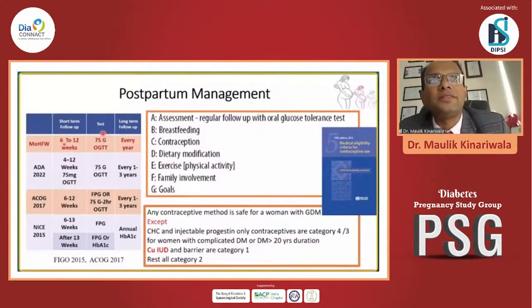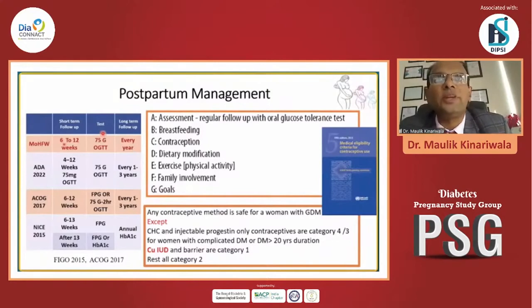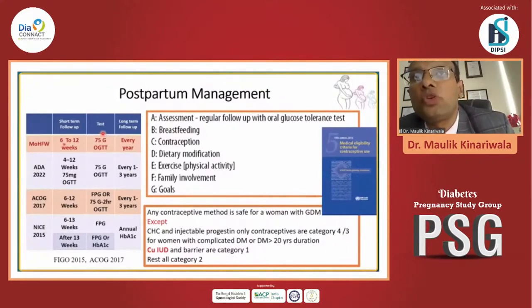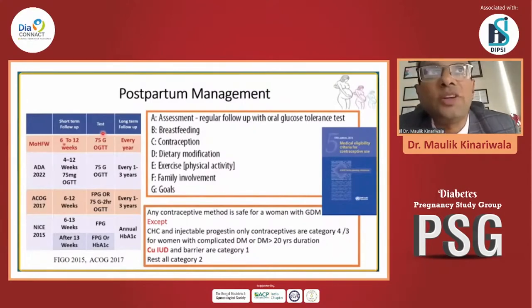To summarize in A-to-G form for postpartum management — both maternal and offspring sides: A is Assessment — regular follow-up with OGTT at 6 to 8 weeks after delivery. B is Breastfeeding — encourage it. C is Contraception — properly advised. D is preventing early onset of diabetes. E is Dietary modification with the help of a nutritionist and dietitian. F is Exercise and physical activity. G is family involvement, because husbands often don't engage after post-GDM, and mothers get busy with the baby and miss follow-up.